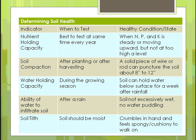Soil compaction also makes a difference for soil health. Right after planting or after harvesting — when tractors and combines are in the fields — a solid piece of wire or rod should be able to puncture your soil to a depth of about 8 to 12 inches. If it can't, you have too much soil compaction and need to address that.